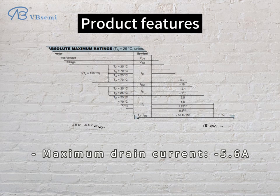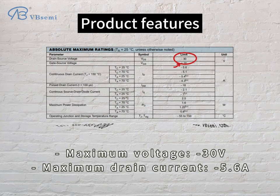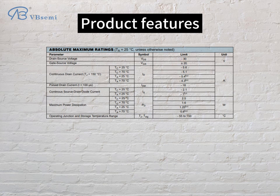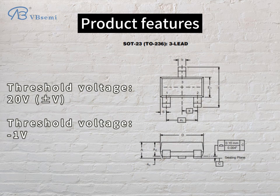Product features: maximum voltage -30V, maximum drain current 5.6A, threshold voltage -1V to -2.0V.